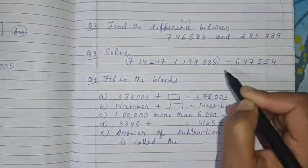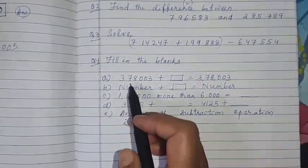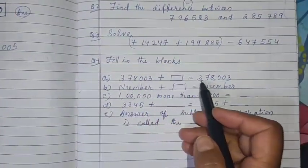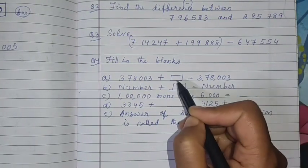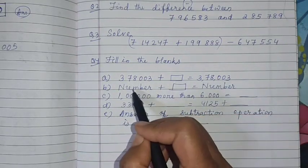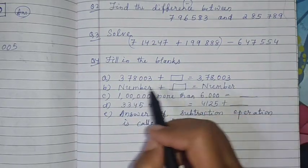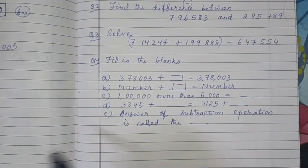Now solve. Same that I solved. Next addition and subtraction together are there. First you have to do this addition, then you subtract the third number. Fill in the blanks. 378,003 plus dash equal to 378,003. If same answer means what is here? Zero. If zero is added to any number, you get the same number.